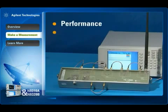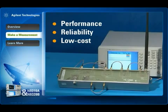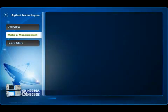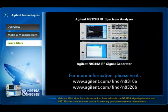Agilent's low-cost compact N9310A signal generators and N9320B spectrum analyzers deliver all the capability and reliability you expect from Agilent instruments at a price too good to pass up. Visit our website for a closer look at how valuable the N9310A signal generator and N9320B spectrum analyzer can be in meeting your measurement requirements.